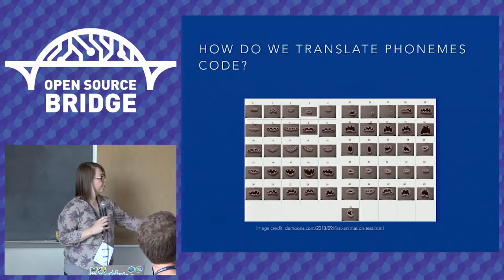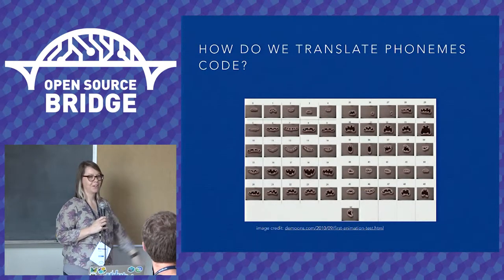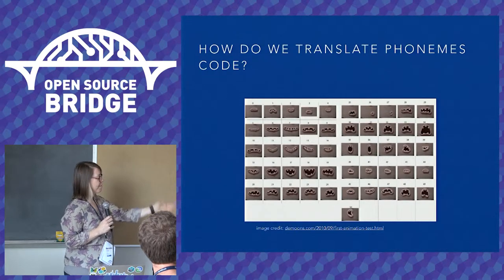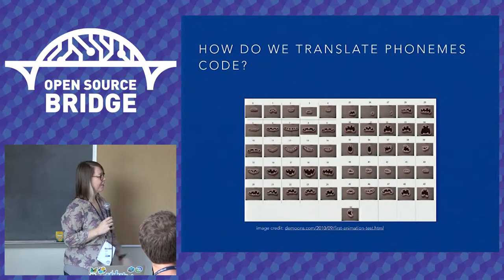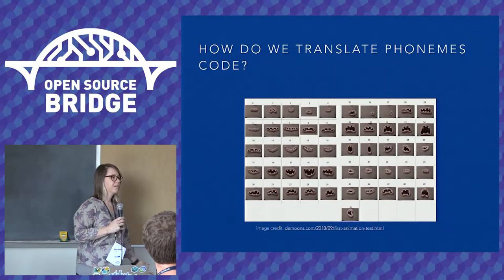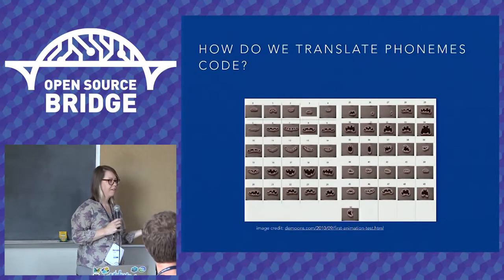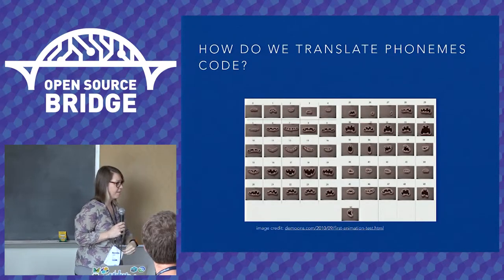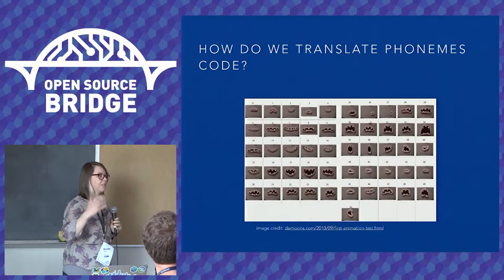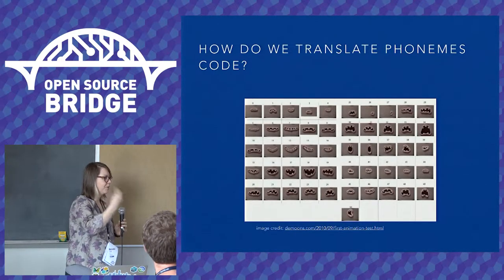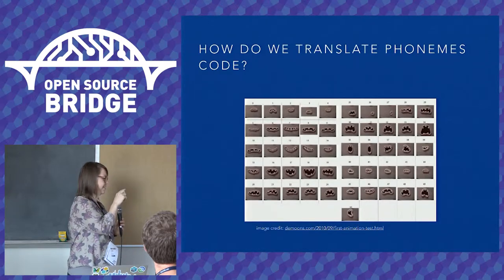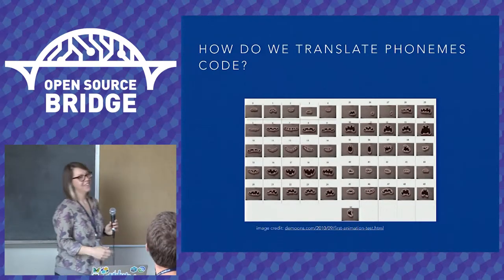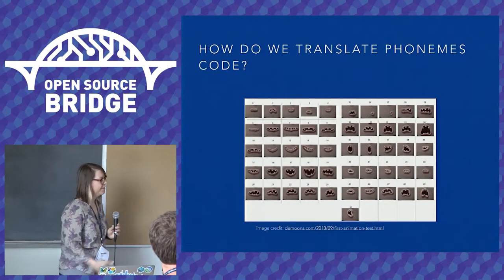So how do we translate phonemes to code? As a side note, when I was looking up this stuff, I found that a phonetic mouth chart is something really common in animation. Animators use phonemes to basically make it so that the characters they're animating look like they're saying words correctly. It's also interesting if you watch anime and look at how they're speaking the words — it's similar but just doesn't match up with English very well, which is why I prefer to watch it in Japanese.